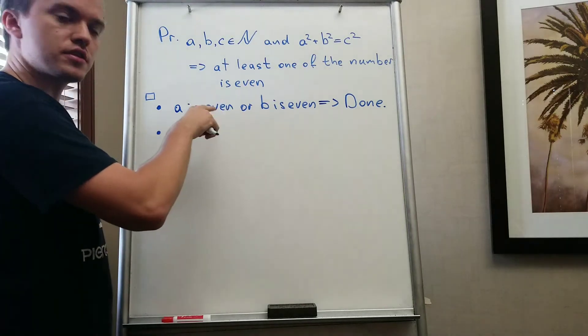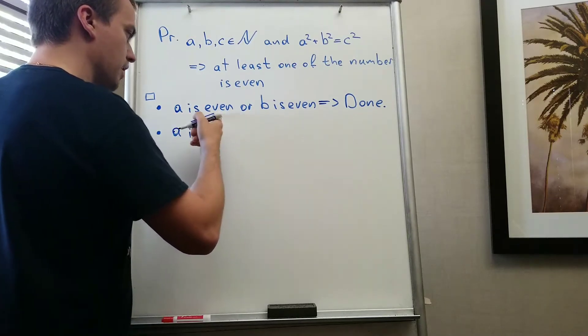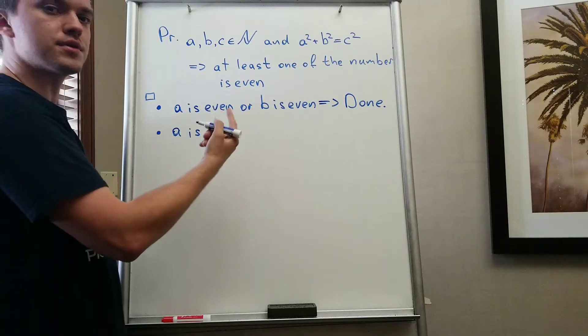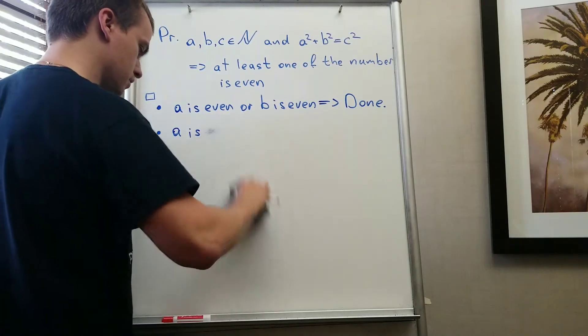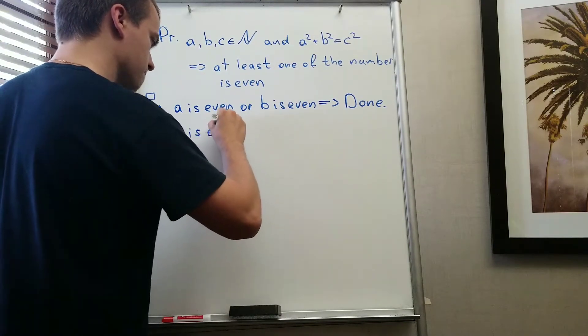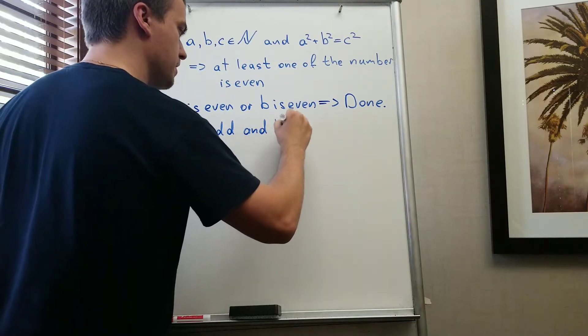take the negation of this. The negation of this is going to be, if a number is not even it means the number is odd. A is odd and